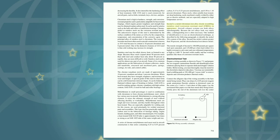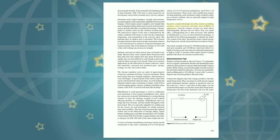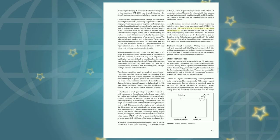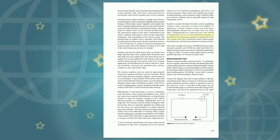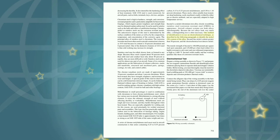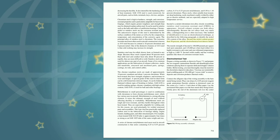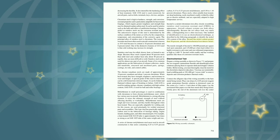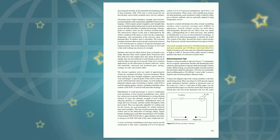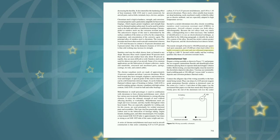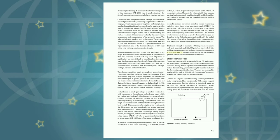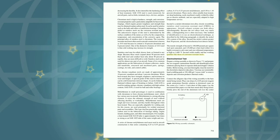Inconel is a nickel-chromium-iron alloy closely resembling stainless steel in appearance. Aircraft exhaust systems use both alloys interchangeably. Because the two alloys look very much alike, a distinguishing test is often necessary. One method is to use an electrochemical technique to identify the nickel content of the alloy. Inconel has a nickel content greater than 50%. The tensile strength of Inconel is 100,000 psi annealed and 125,000 psi when hard rolled. It is highly resistant to salt water and can withstand temperatures as high as 1,600 degrees Fahrenheit. Inconel welds readily and has working qualities like those of corrosion-resistant steels.